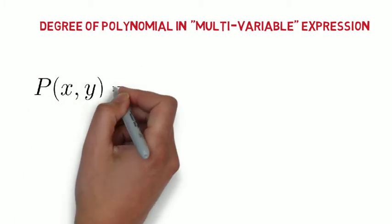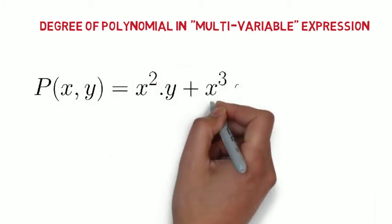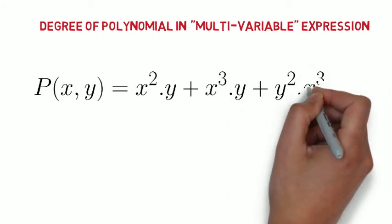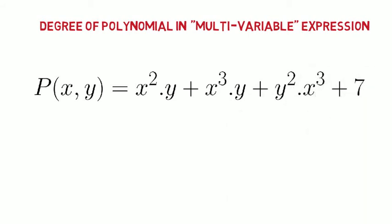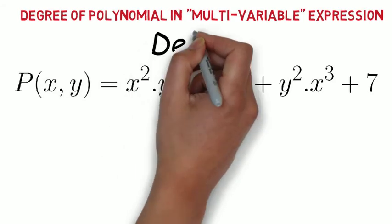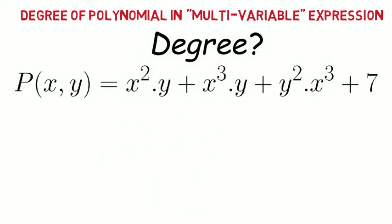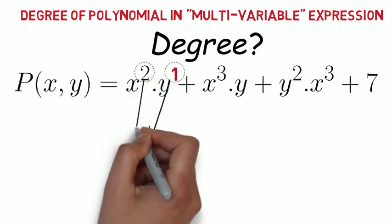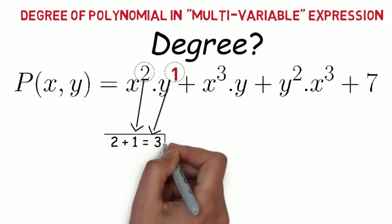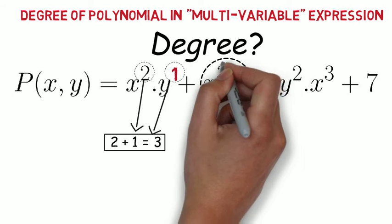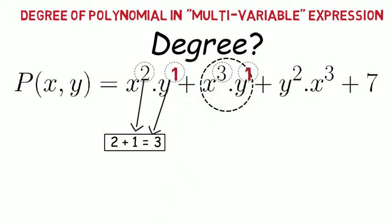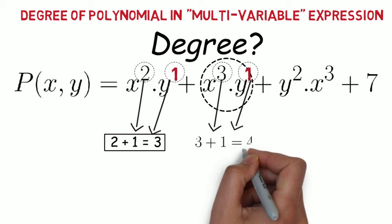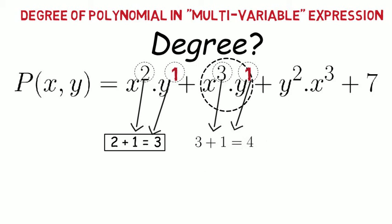See, on your screen, we have polynomial expression: x square y plus x cube y plus y square x cube plus 7. Now what is the degree of this polynomial? See, first term we have x square y, add the exponent power as shown, means we have total 3 variables. See, second term we have x cube y, means 3x and 1y, or 3 plus 1, total 4 variables. Notice, we are just adding the variable exponent power in each term.